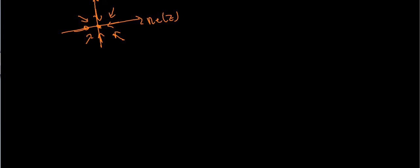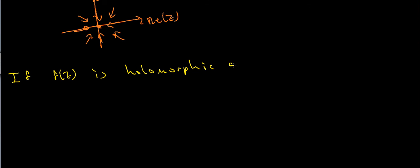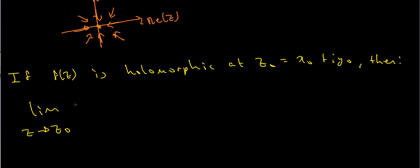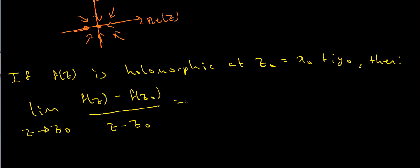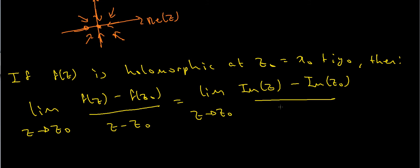The first thing is to write out the limit definition of a derivative. If f(z) is holomorphic at some point z₀ — which I'll call x₀ + i·y₀ — then the following limit exists: the limit as z approaches z₀ of [f(z) − f(z₀)] / (z − z₀). But f(z) is the imaginary part of z and f(z₀) is the imaginary part of z₀, so this becomes the limit as z → z₀ of [Im(z) − Im(z₀)] / (z − z₀).